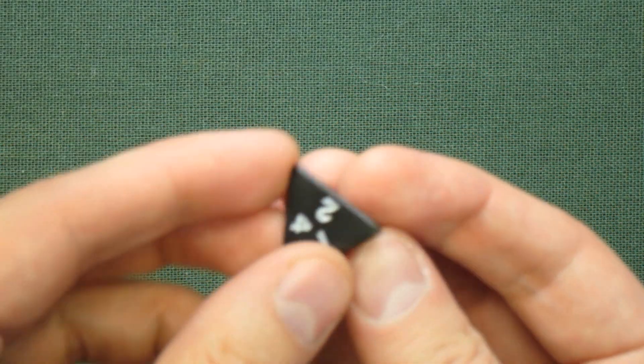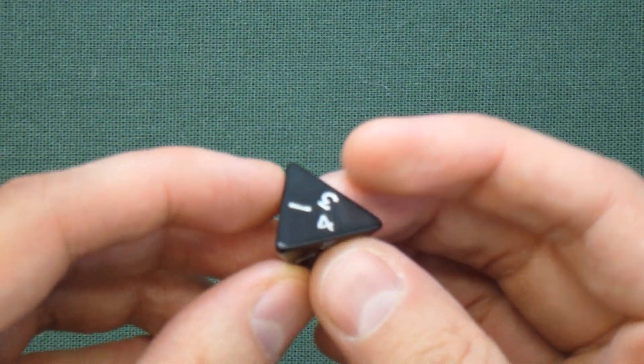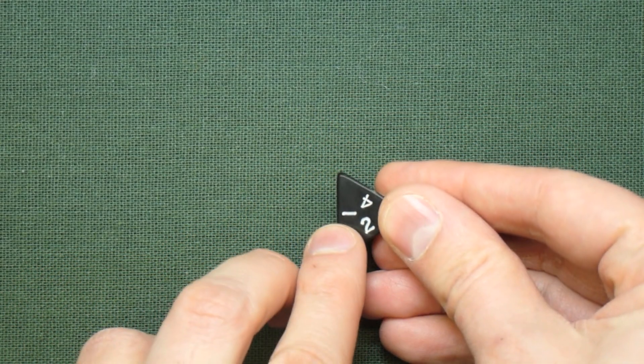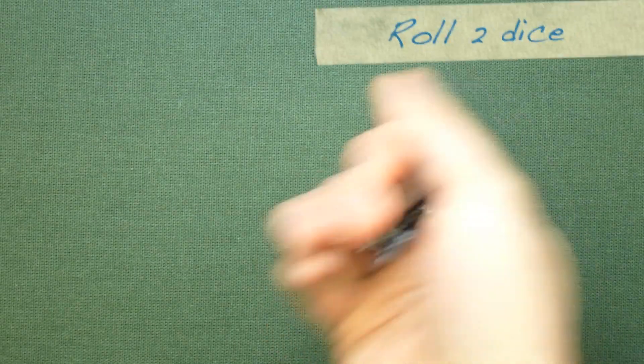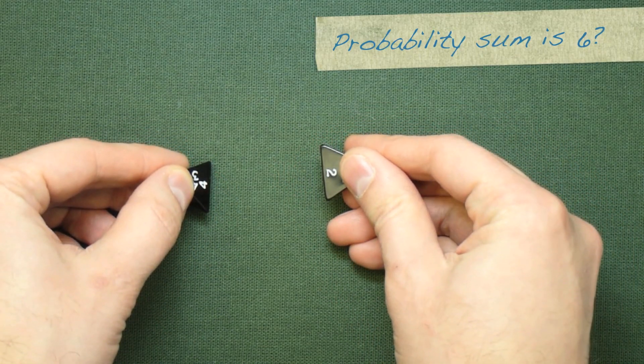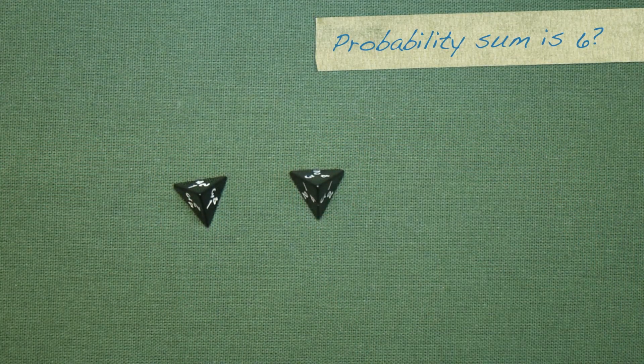This is a four-sided die. You can see it's shaped like a pyramid. It's got four sides and when you roll the die, the number that comes up on the bottom is the number that you rolled. So we're going to roll two dice and we want to find out what's the probability that the sum of the two dice is six.